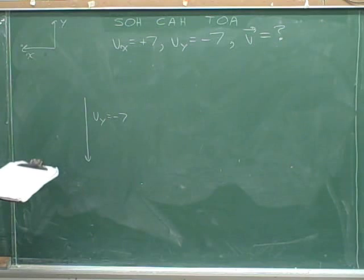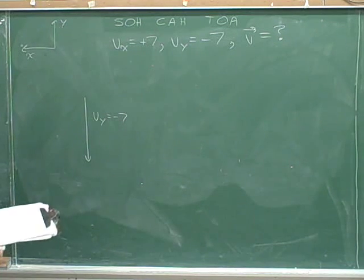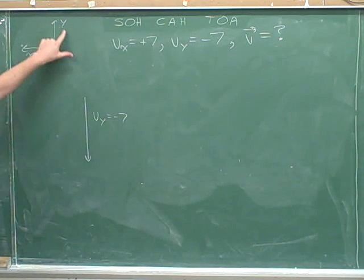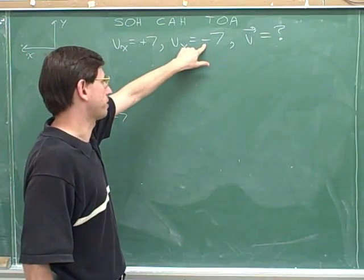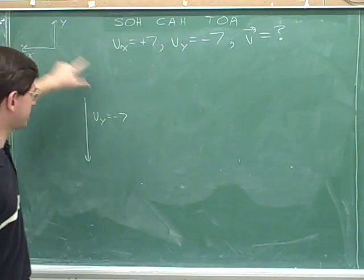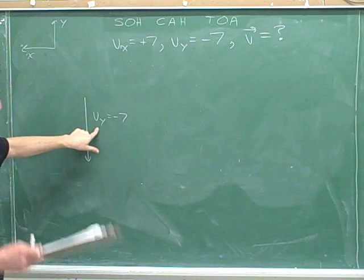Now I have to draw the x component. By the way, why is this pointing down? Because up is positive and the y component is negative. Since up is positive and the y component is negative, it should be pointing down.